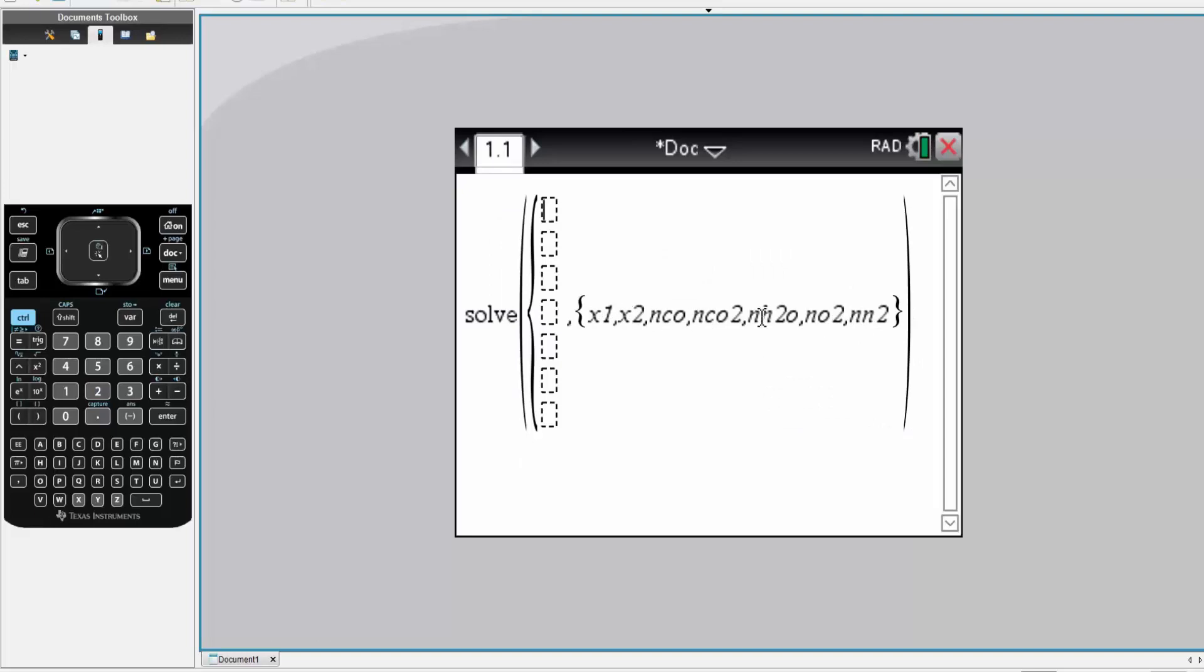So now we just write what we have. So four is equal to 20 minus X1 minus X2, first equation. NCO is equal to extent of reaction one. Third equation, NCO2 is equal to five times NCO. This was one of the relationships.